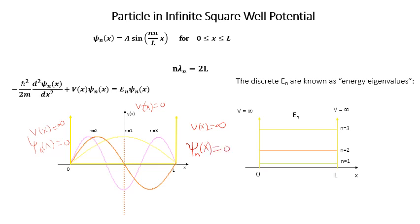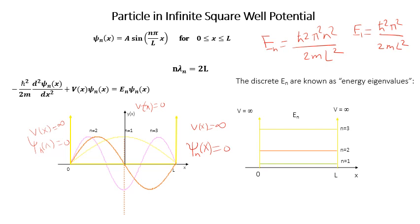Now if we plot the energy eigenvalues, we can write En equal to h-bar squared pi squared n squared divided by 2mL squared. Substituting n equal to 1, 2, 3, 4, we get different energy eigenvalues. E1 is h-bar squared pi squared over 2mL squared, which is the ground state energy. E2 is four times E1, since n squared equals 4 when n equals 2.